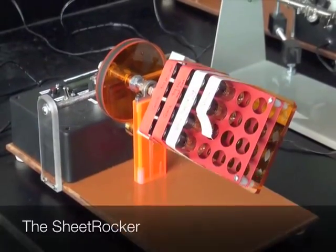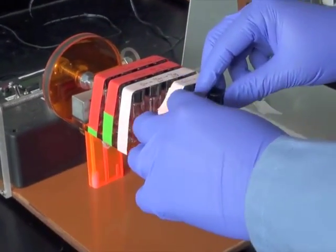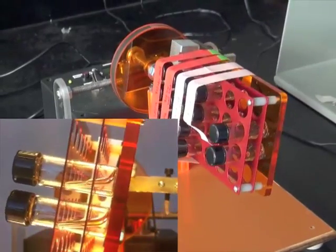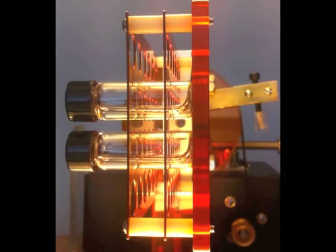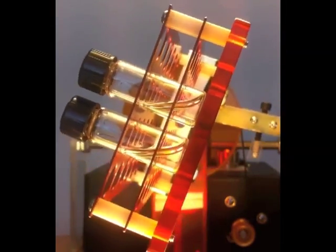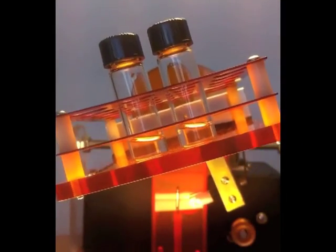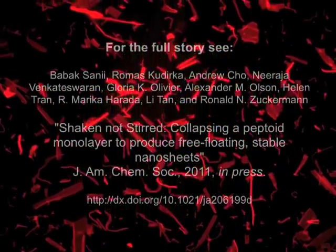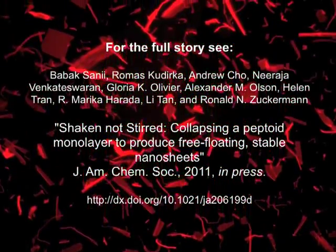We came up with a much more controlled method of doing this by rocking a vial gently from vertical to horizontal and back again. And what this does is it compresses the surface area of the liquid in the vial in a very defined way. And this cycle can be repeated over and over to produce large quantities of nanosheets.